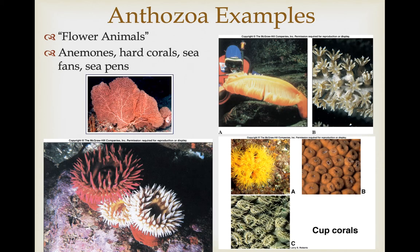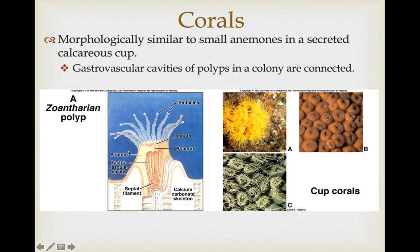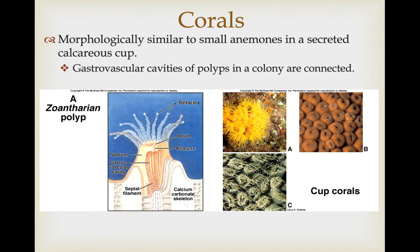Examples of anthozoans—the name actually refers to 'flower animals.' This refers to things like sea anemones, hard corals that make up coral reefs, sea fans, and sea pens. Each individual zooid in a coral is really similar to a small anemone, but they secrete calcareous cups around them which form the coral reefs. Interestingly, these are connected through the gastrovascular cavity to other polyp individuals in the colony.